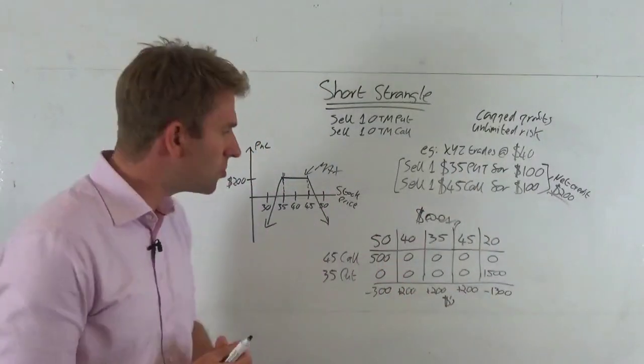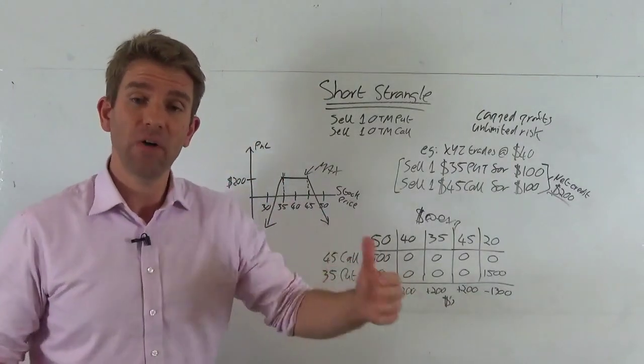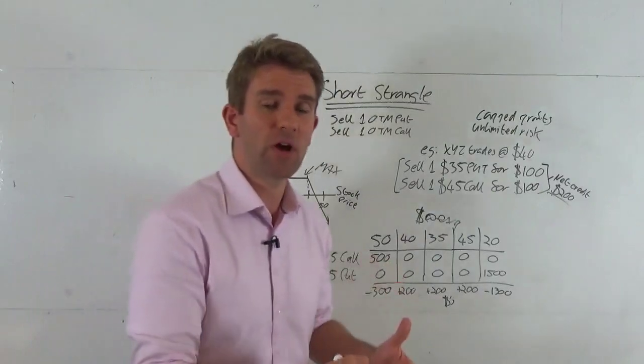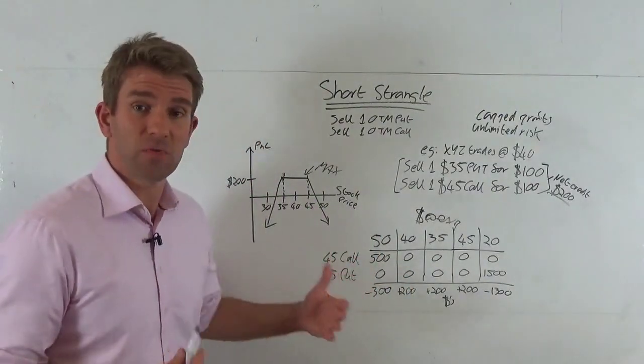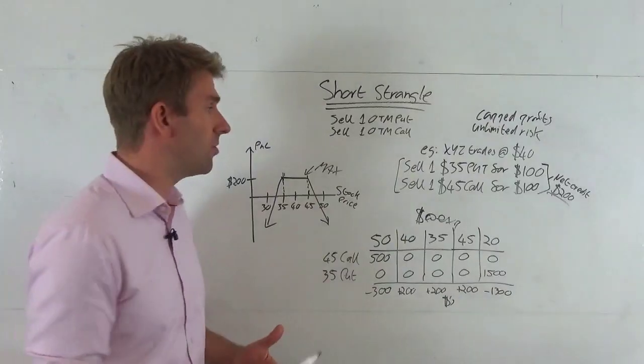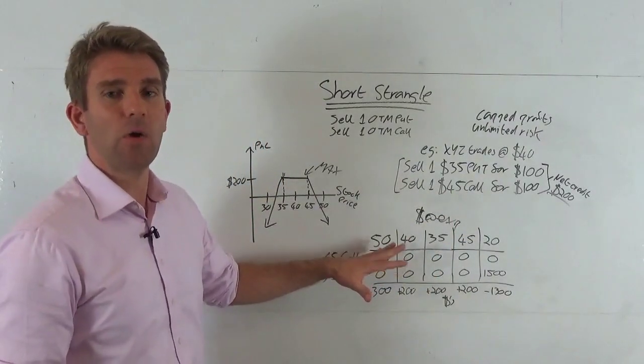What happens if things don't go our way? Let's say it goes out of the range, goes to $50. What does the $45 call become worth? Well it's $5 worth of value times by the 100, it's worth $500. And the $35 put though does expire worthless, so we've got the full $100 on that.